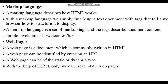Next, what is a web page? A web page is a document which is commonly written in HTML. A web page can be identified by entering a URL. A web page can be of static or dynamic type. With the help of HTML only, we can create static web pages, and to make it dynamic we will study that in the next videos.